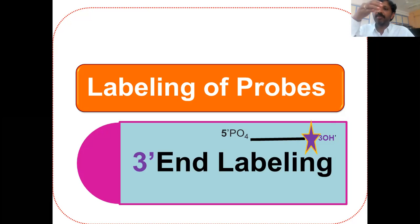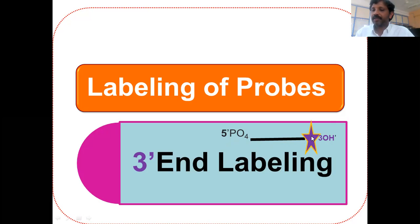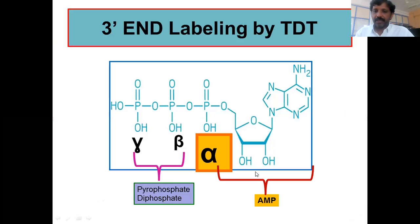These labels are incorporated at the three prime end of DNA or RNA fragments. You can see here a DNA fragment having a five prime phosphate and three prime OH, where labeled nucleotides are incorporated at the three prime end. This kind of labeling is called three prime end labeling.